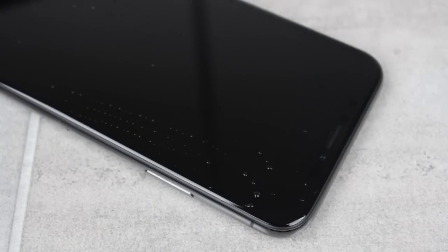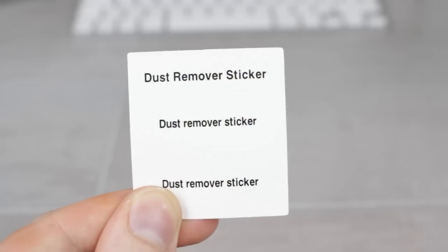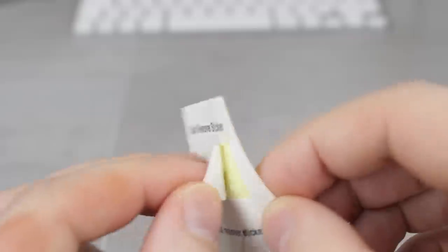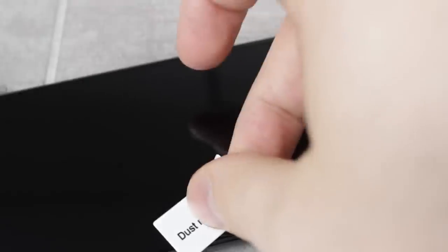After using the alcohol wipe, you'll then need to use the microfiber cloth to clean and dry your screen before finally using the dust removal stickers like so. This will remove any final dust or lint that can be very annoying if not removed at this stage, as no one likes seeing dirt or blemishes that they can't get rid of underneath their newly applied protector.